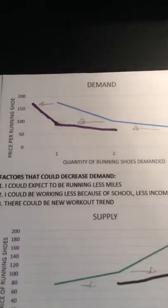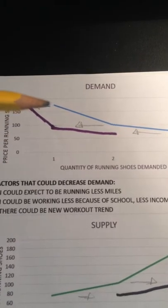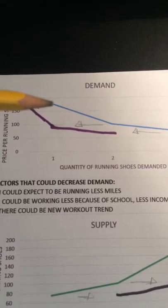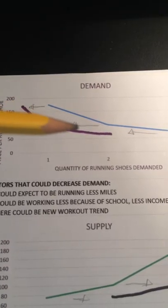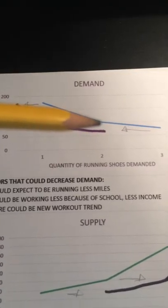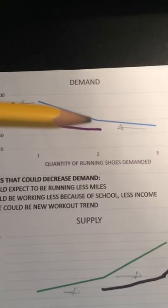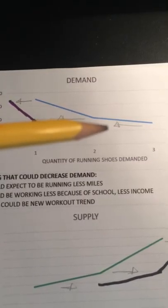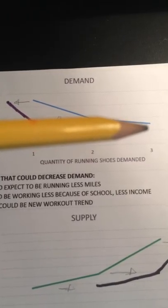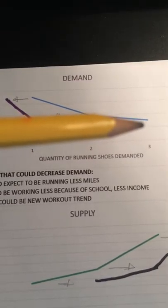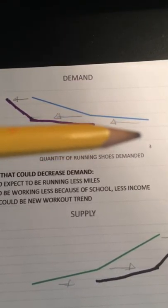At a price of $175, the quantity demanded is 1. At a price of $100, the quantity demanded is 2. And at a price of $75, the quantity demanded is 3.